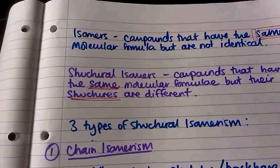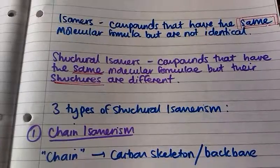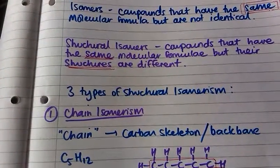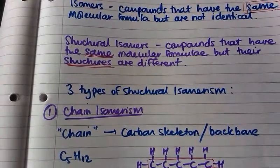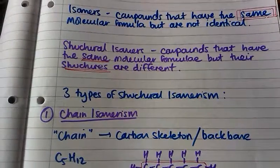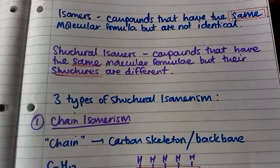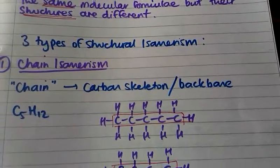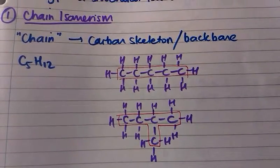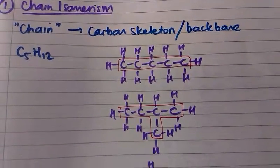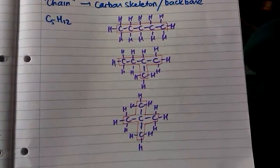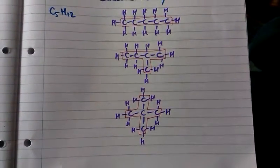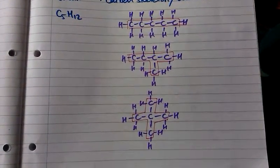The first type is chain isomerism. When we say chain, we're referring to the carbon skeleton or backbone of a compound. For example, if we have a compound with the formula C5H12, for chain isomerism to occur the carbons need to be arranged differently. We can have five carbons in a line, then move one carbon from the end to the middle to create a branch, and then do the same with a carbon from the other end to get two branches. So for C5H12 we can get three chain isomers — all with the same molecular formula but different structures.